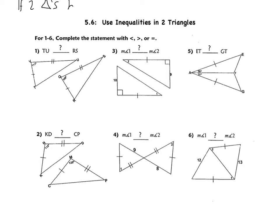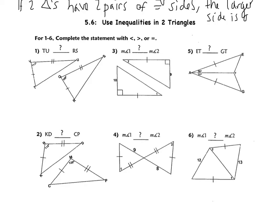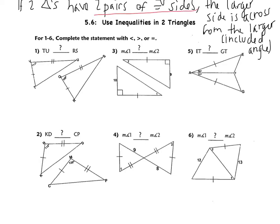The hinge theorem says: if two triangles have two pairs of congruent sides, the larger side is across from the larger included angle. The most important part is the two pairs of congruent sides.